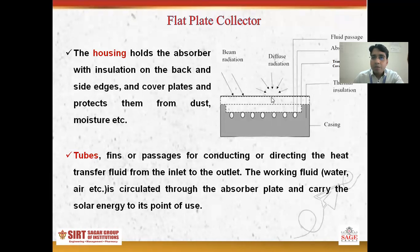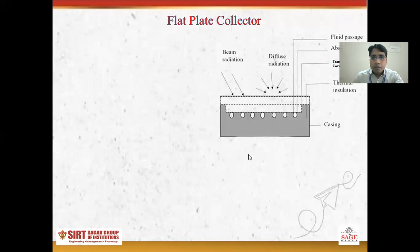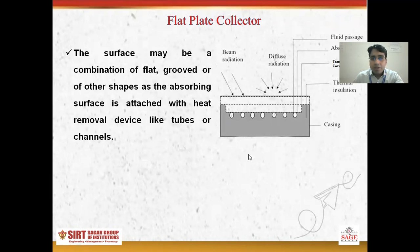As you can see here, this flat plate collector can utilize both types of radiation — either beam radiation or diffuse radiation. The surface may be a combination of flat, grooved, or other shapes of absorbing surfaces.